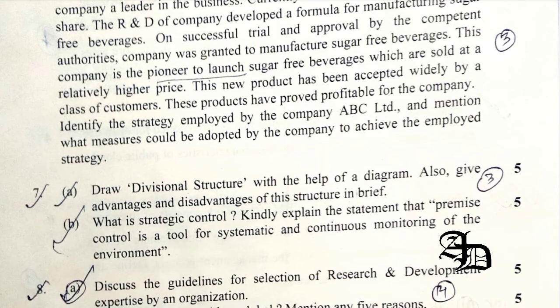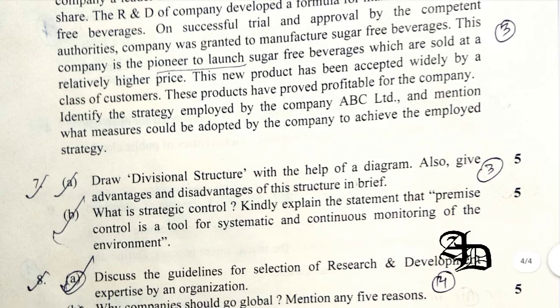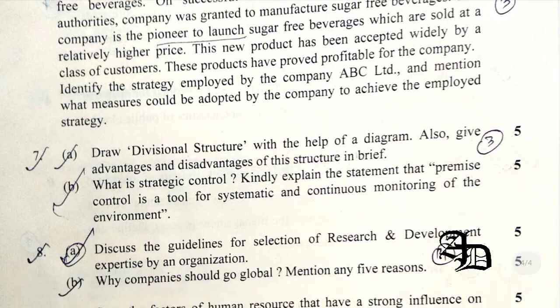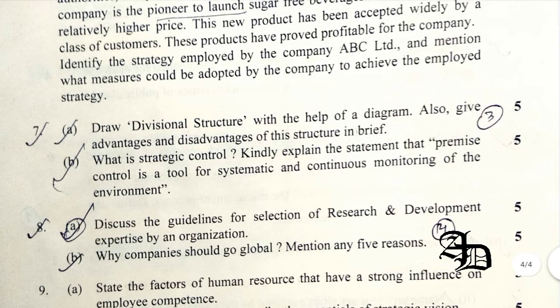Question 7A was related to drawing a divisional structure. For example, you can draw a Chief Executive, under whom are Corporate Finance and Corporate Legal. Under Corporate Finance, you can further divide into General Managers, then further into different levels of assistants, managers, and personnel. The question also asked for advantages and disadvantages of these structures — the detailed answer is available on my blog.